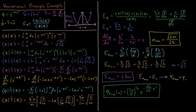Our approximate energy is the integral over all space of phi star times H acting on phi. We need to normalize, so we divide by the integral over all space — in this case from negative infinity to infinity in x — of phi star times phi.